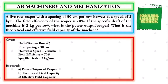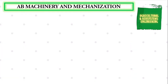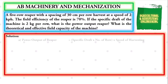After identifying the given and the required in the problem, we proceed with our solution. The first value that we are going to solve is the power output of the reaper. The formula is the product of specific draft times the number of rows, multiplied by the speed of harvesting.